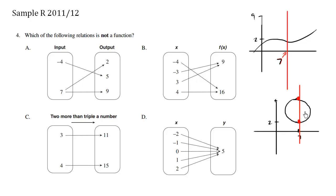So this here is not a function. This here is not a function, so we circle choice A.